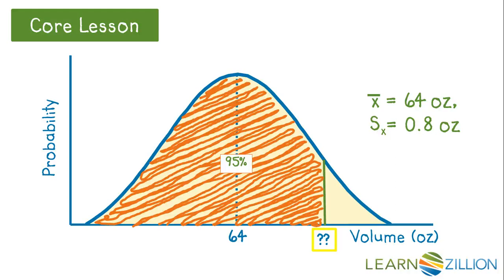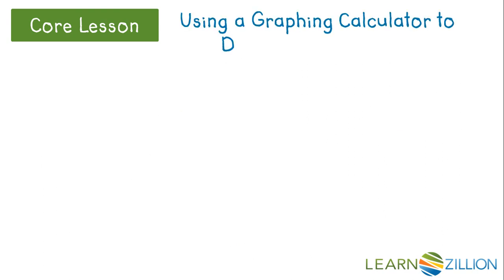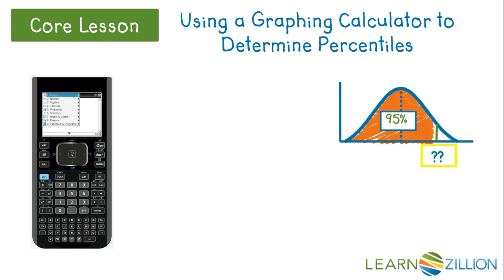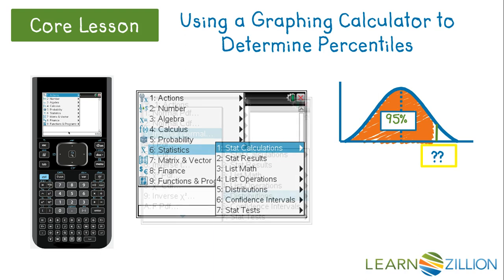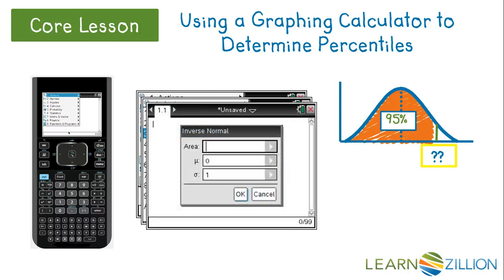The question shown in the graph here could be worded like this: What is the 95th percentile volume for half-gallon jugs? To answer this question, we start by making our sketch by hand and then taking out the graphing calculator. After pressing the menu button, we choose Statistics, then Distributions. Remember that when we knew the value on the horizontal axis and wanted to know the percentage, we used Normal CDF. Now we know the percentage and are looking for the value on the horizontal axis, so we use the Inverse Normal function. This function takes the percentage under the curve as its input and returns the value on the x-axis that the given percentage of observations are below.